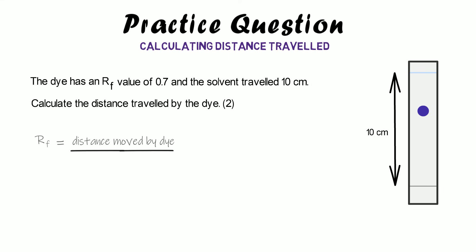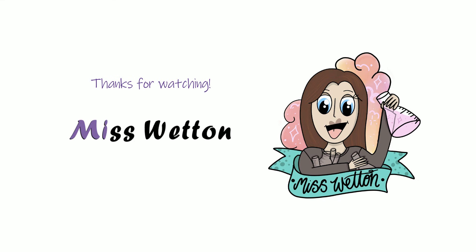We still use RF equals distance moved by dye divided by distance moved by solvent. We know RF is 0.7 and the solvent moved ten centimetres, so: 0.7 equals something divided by ten. What divided by ten gives 0.7? Seven centimetres — so the dye will have travelled seven centimetres. You can also rearrange the equation if you know how. Thanks for watching — let me know what you'd like to see next, bye!